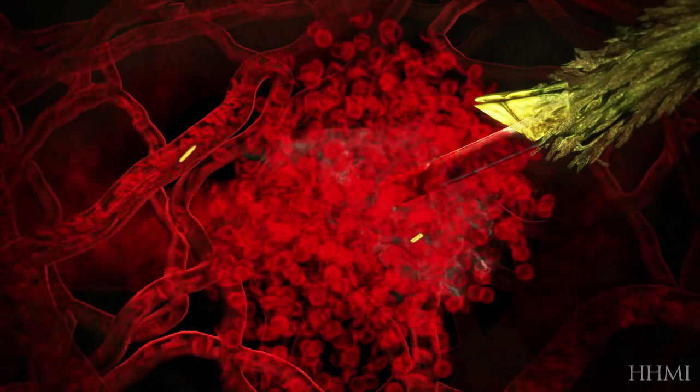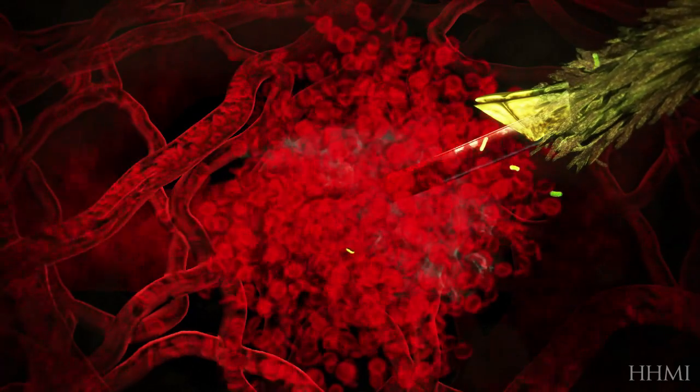The parasite rides the bloodstream like a network of roads seeking its first target, the core of your body's blood filter system, the liver.